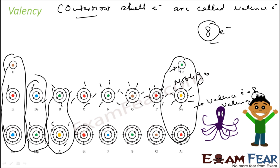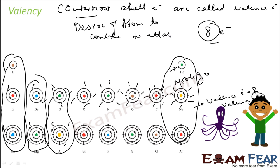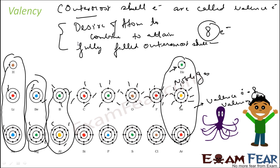This valency, or the combining capacity, can be explained as the desire of a given atom to combine in order to attain a fully filled outermost shell. That is called valency. An atom would actually react to attain a filled outermost shell.